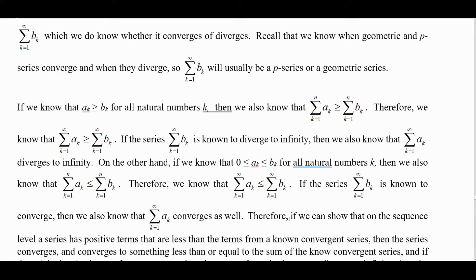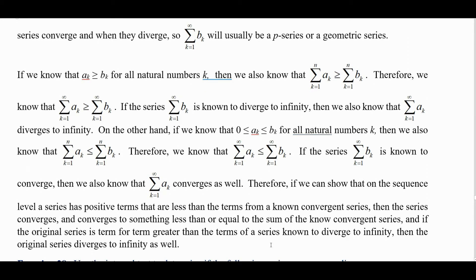If a series has positive terms that are less than the terms from a known convergent series, then the series converges to something less than or equal to the sum of the known convergent series. On the other hand, if the series is term for term greater than the terms of a series that is known to diverge to infinity, then the original series diverges to infinity as well.